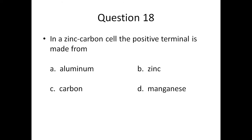Question eighteen: in a zinc carbon cell, the positive terminal is made from — A) aluminum, B) zinc, C) carbon, or D) manganese.